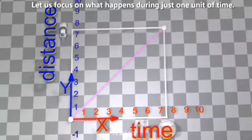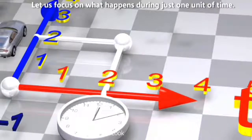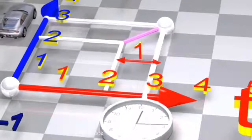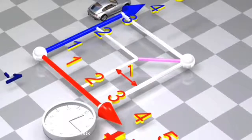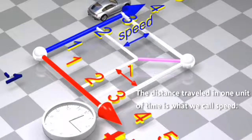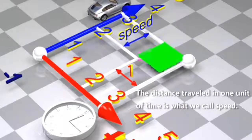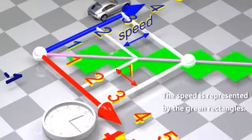Let us focus on what happens during just one unit of time. The distance traveled in one unit of time is what we call speed. The speed is represented by the green rectangles.